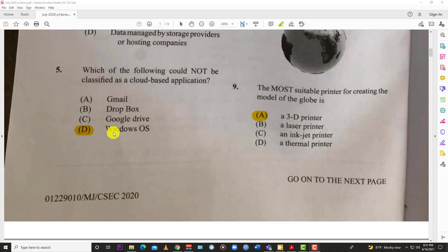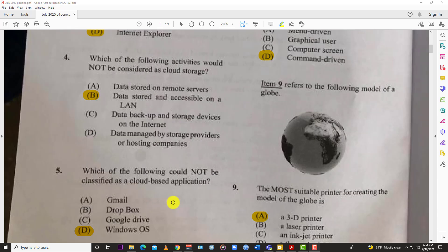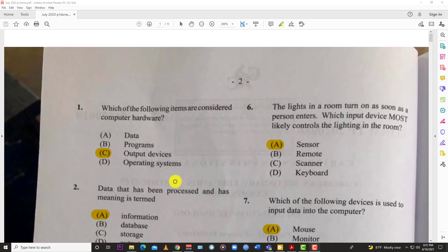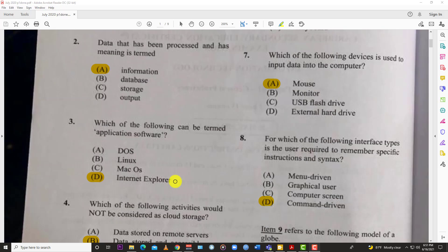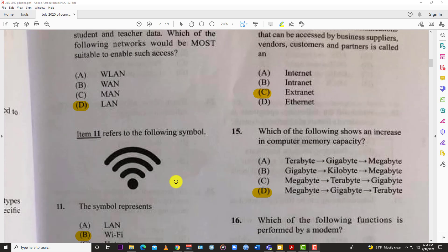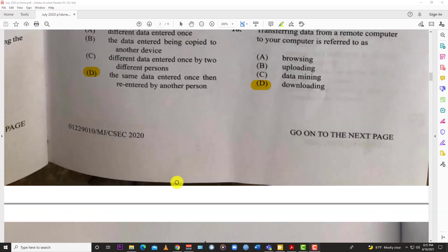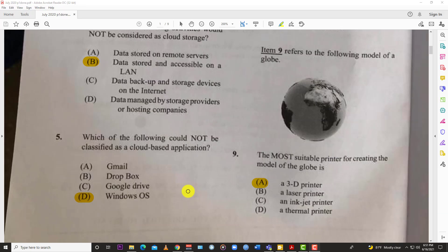Welcome back to Learn SKN. Today we have a CSEC Information Technology Paper 1 from 2020. This is the May-June 2020 CSEC paper one for information technology. This was a real pirated job as you can see - somebody had it on their lap and took some shots, and that's what we have to work with right now.